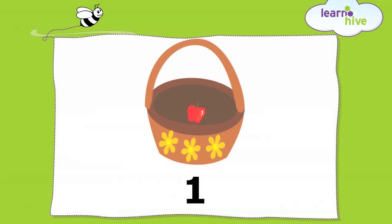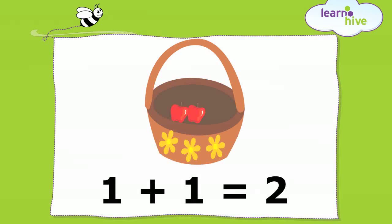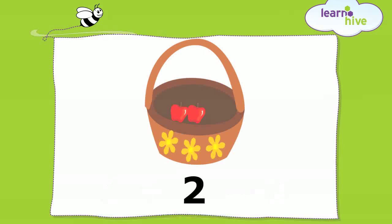Here is a basket with one apple. Let us add one more apple to the basket. Now, we have two apples. So, when you add one to one, you get two.